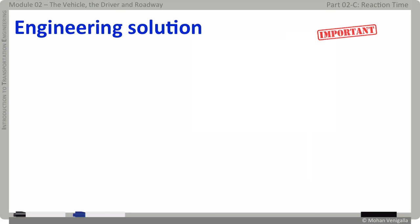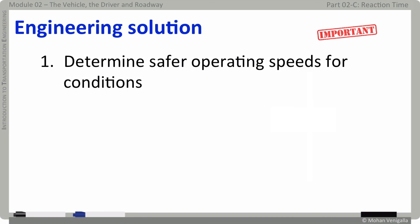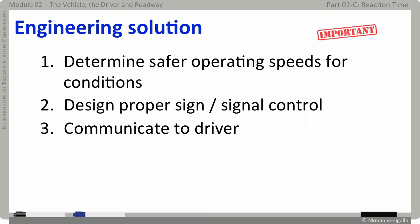Clearly lower the reaction time safer will be the driving world. You will agree to that part. What can we as engineers do to improve reaction times? By improve I mean reduce reaction times. First determine safe operating speed for conditions. In most cases speed is what we have in our control and nothing else sometimes. Safer operating speed is what you see as the speed limit. It is not the same as design speed. What you see as the speed limit is not the design speed and then design proper signage and signal control and communicate that to the driver.